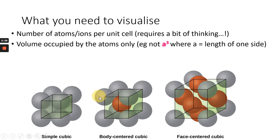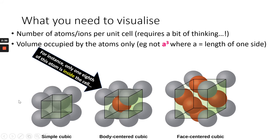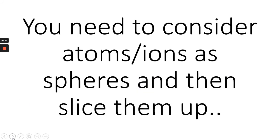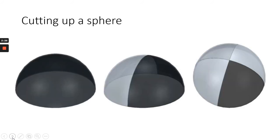If we look at the corner atoms or ions, for example this one, there's only one-eighth of that atom inside the cell. So just before we go any further, let's just think about atoms and ions as spheres, because that's what the model requires you to do, and then slice them up. So you've got half a sphere, two-quarters of a sphere, and four-eighths of a sphere.